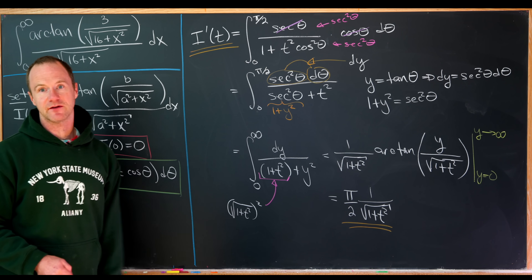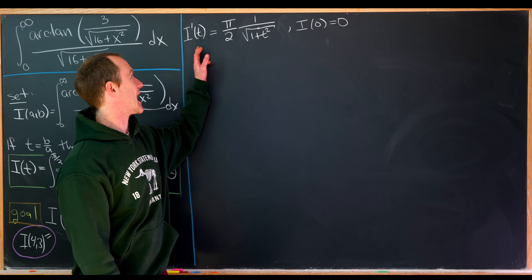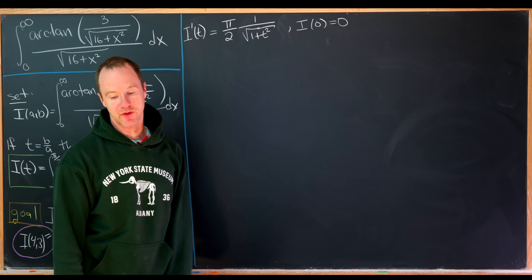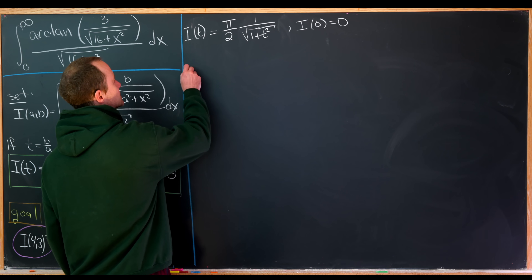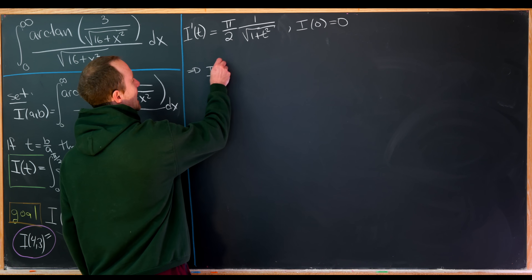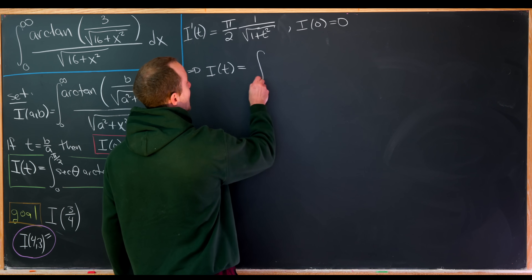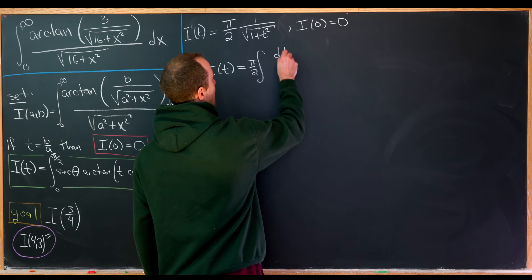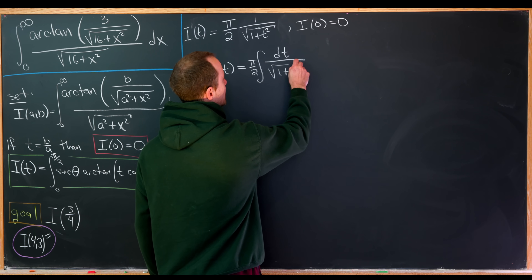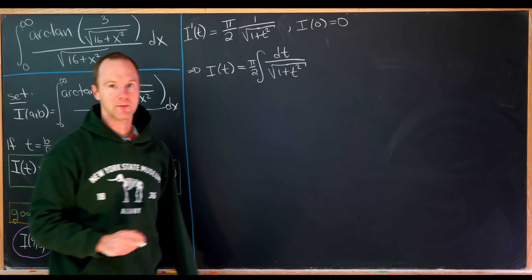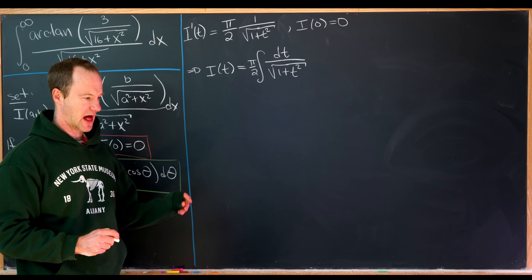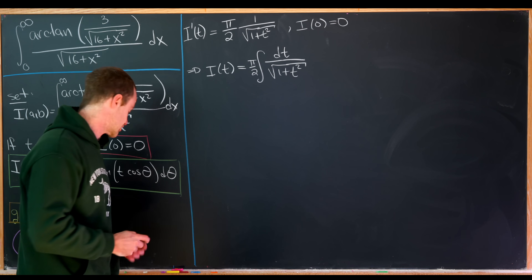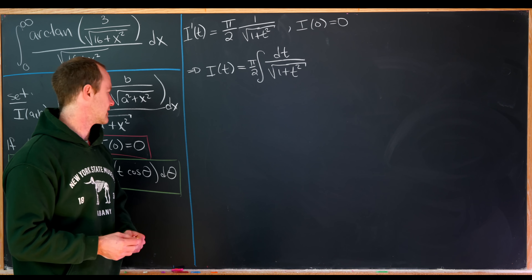Now let's solve that differential equation. We have I prime equals pi over 2 times 1 over the square root of 1 plus t squared, and I(0) equals 0. So I(t) equals the antiderivative of this function: pi over 2 times the integral of dt over the square root of 1 plus t squared. After taking the antiderivative we'll fiddle with the constant of integration to satisfy the initial condition.